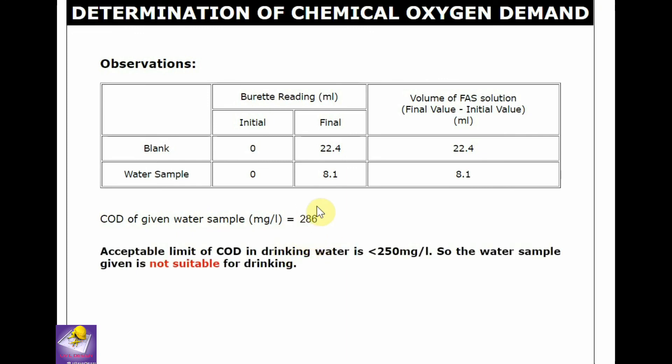So our reading is 286 mg per liter, so this is greater than 250 mg per liter. So according to BIS standard, this is not suitable for drinking.